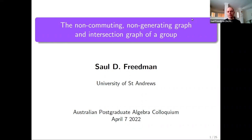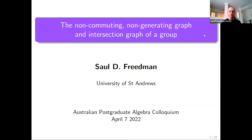In this talk, I'll be speaking about two graphs defined on a group: the non-commuting, non-generating graph and the intersection graph. The first graph will be the focus of most of the talk, and towards the end I'll speak a bit about the second. Some of the results I will mention are joint work with my PhD supervisors, Kovara Nudugel and Peter Cameron. Before defining these graphs, I'd like to introduce some concepts in the context of a very well studied graph called the generating graph.